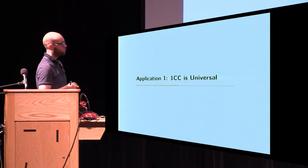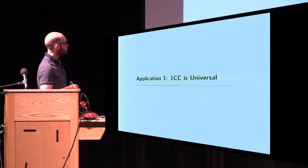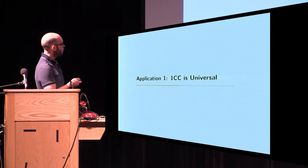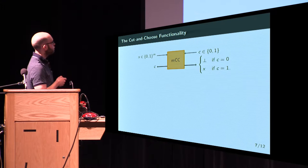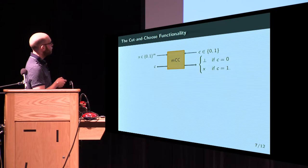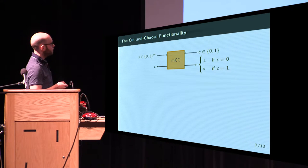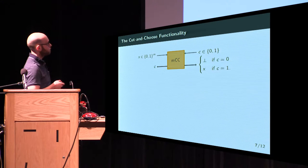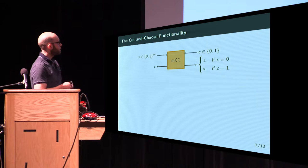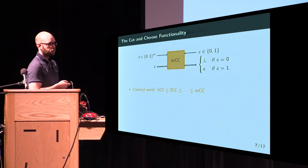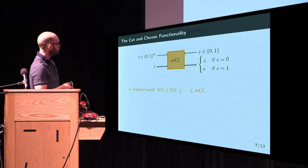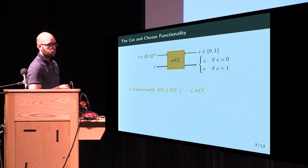We'll demonstrate this with two applications. The first is to show that the primitive one-bit cut-and-choose is universal. In m-bit cut-and-choose, Alice has an input x of size n, Bob has an input c. Alice gets Bob's input, and Bob gets Alice's input if c equals one, and nothing if c equals zero. At first glance it's not clear this primitive is useful. In the classical world, you have an infinite hierarchy of cut-and-choose primitives specified by input length, where every member is strictly weaker than the one after it — 2cc can implement 1cc, but 1cc cannot implement 2cc.